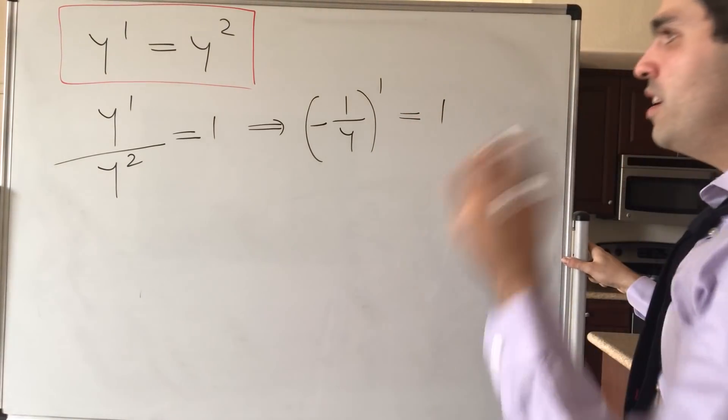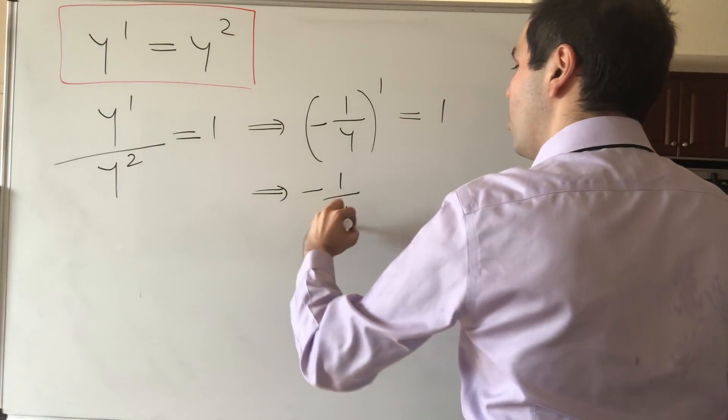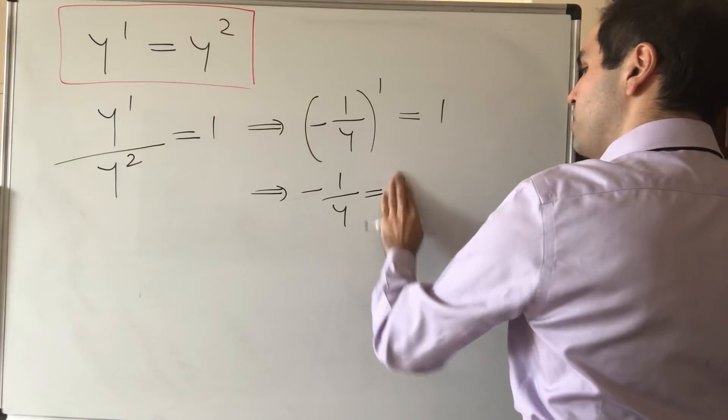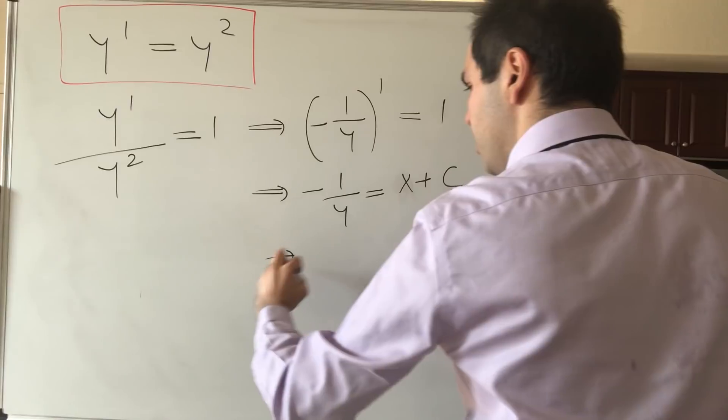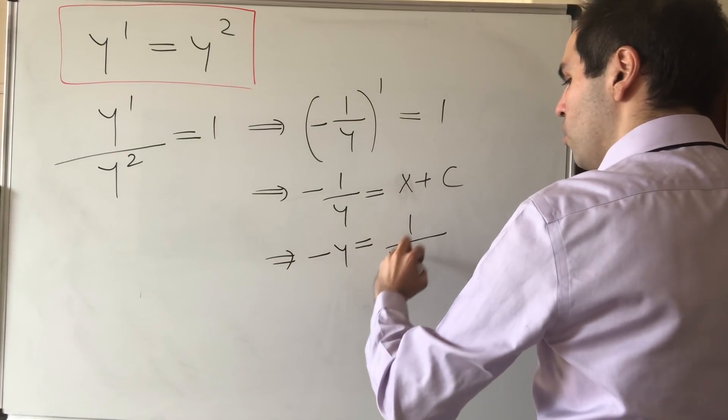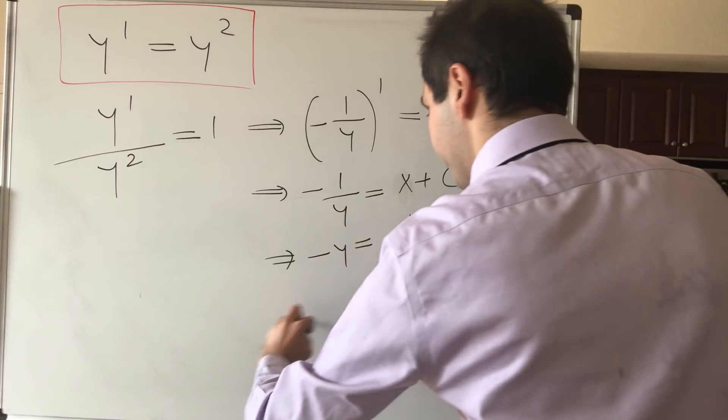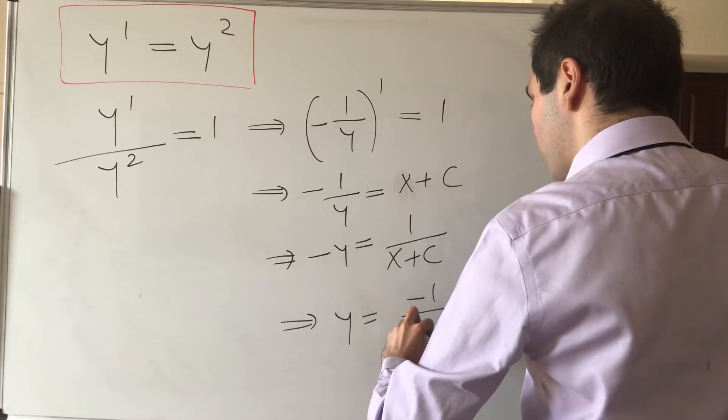And that equals 1. And then if you integrate, you get minus 1 over y equals x plus some constant. And so if you take reciprocals, minus y is 1 over x plus c, which tells you that y is minus 1 over x plus c.